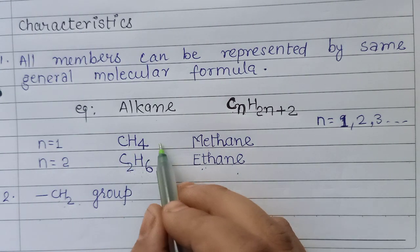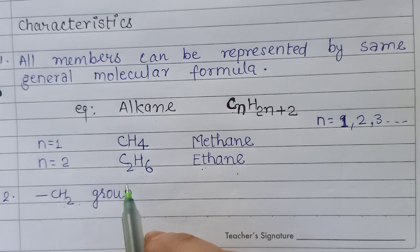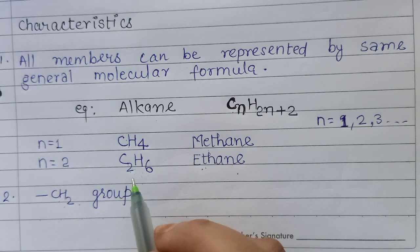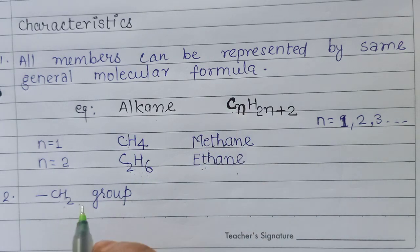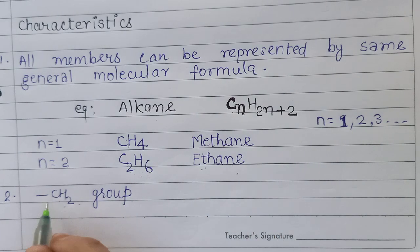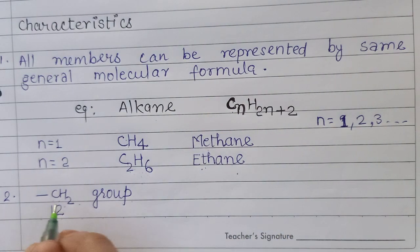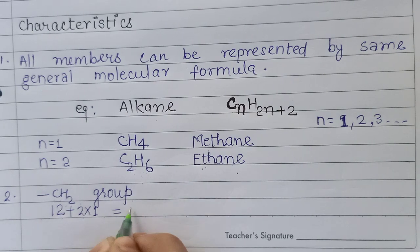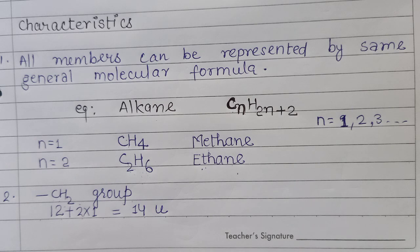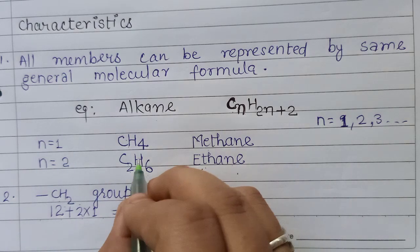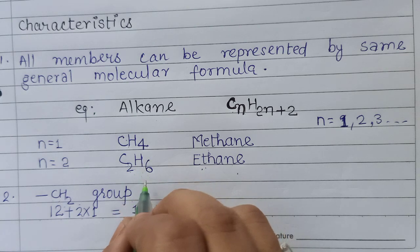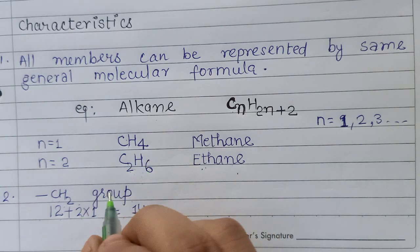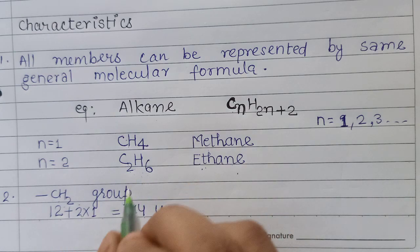The next characteristic: the molecular mass of a compound in the series differs by 14 units from that of its neighbor. This is because the atomic mass of carbon is 12 and that of hydrogen is 1, so CH₂ has a mass of 12 + (2×1) = 14 units.